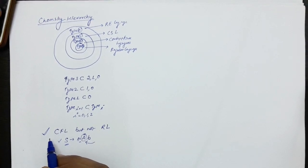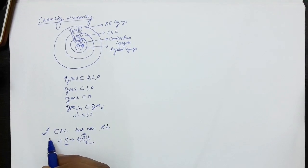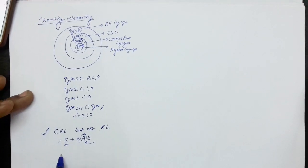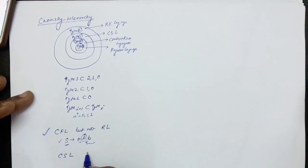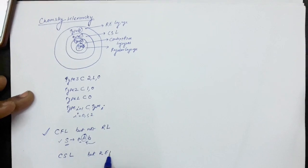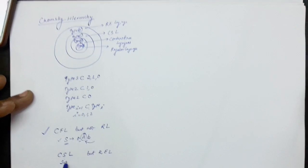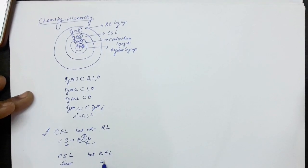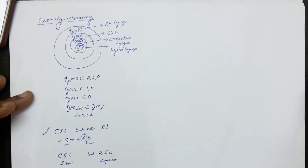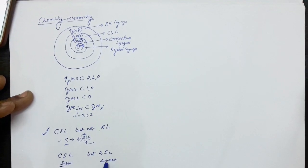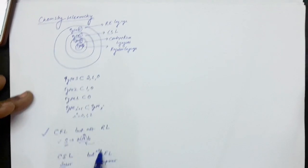It is possible that a language is context-free but not regular. Now consider the claim: a language is context-sensitive but not recursively enumerable. Since context-sensitive language is a subset of recursively enumerable language, it is not possible for a language to be context-sensitive but not recursively enumerable.